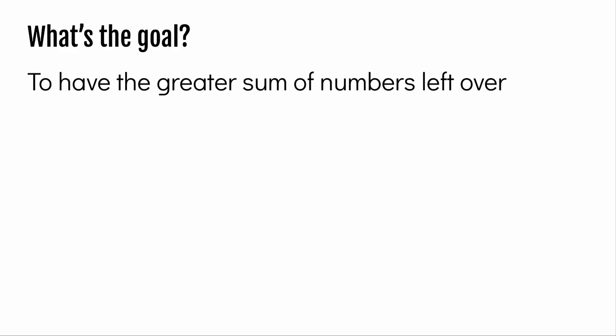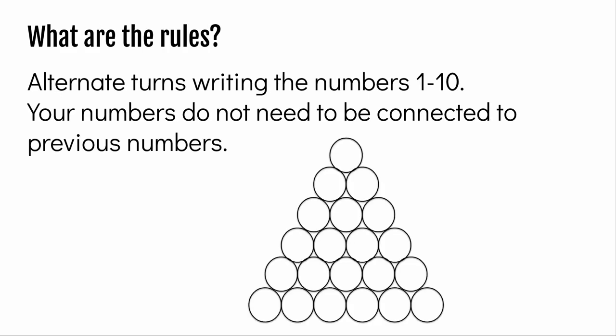The winner is the player at the end of the game with the greatest sum. Alternate turns writing the numbers 1 through 10. Your numbers do not need to be connected to your previous numbers. Let's watch a sample game.